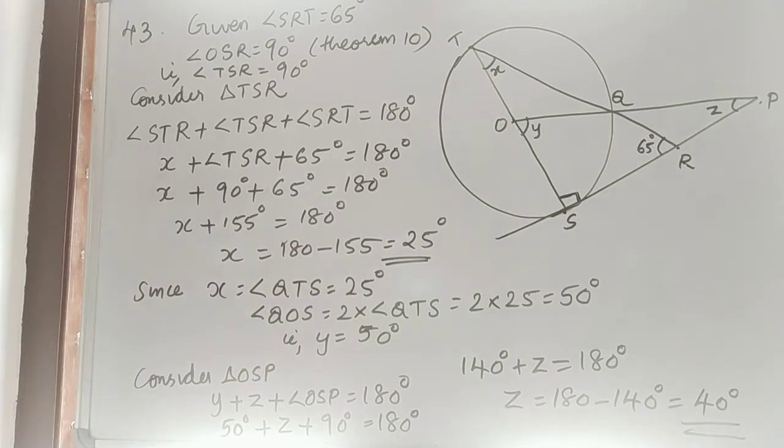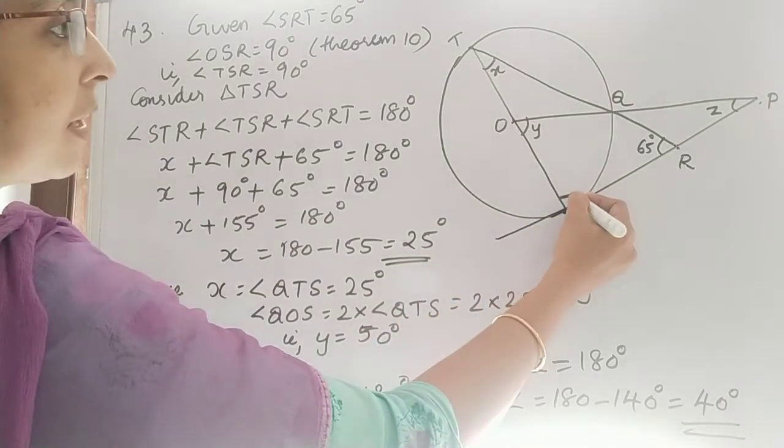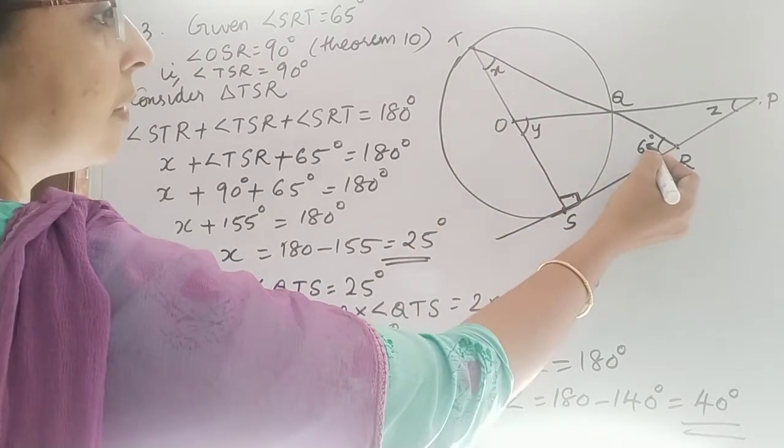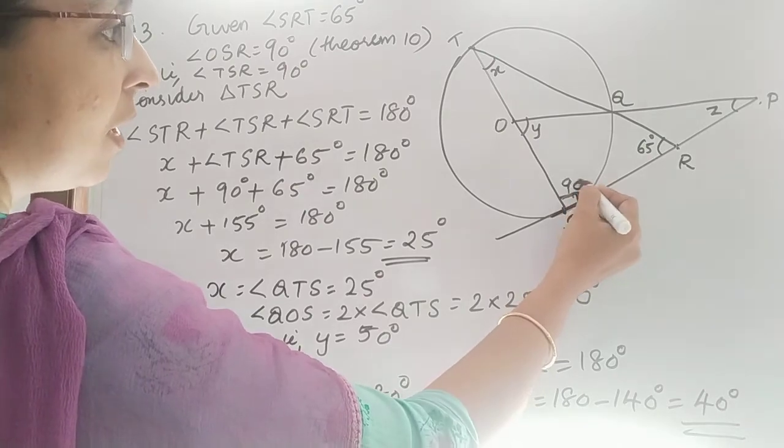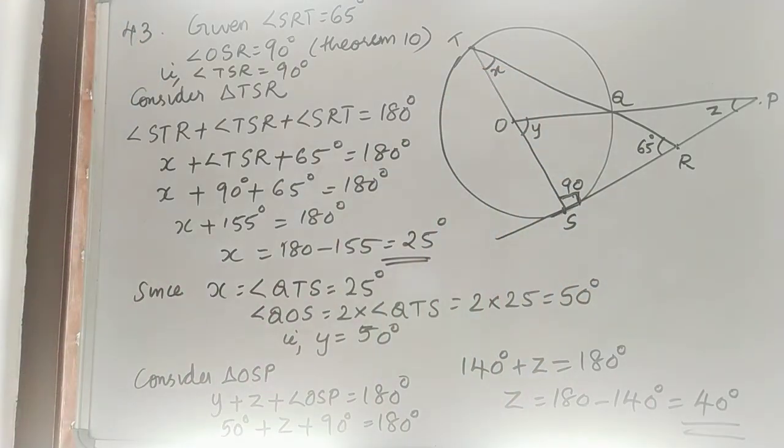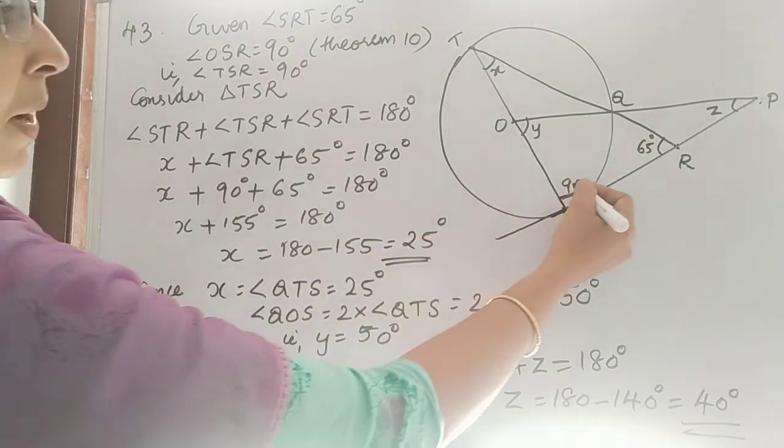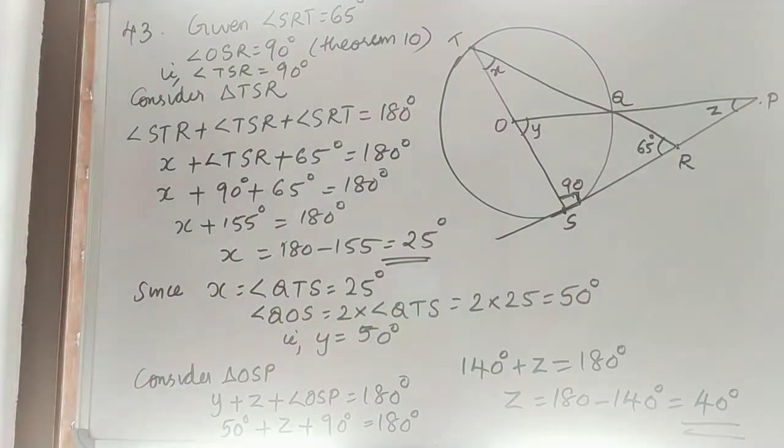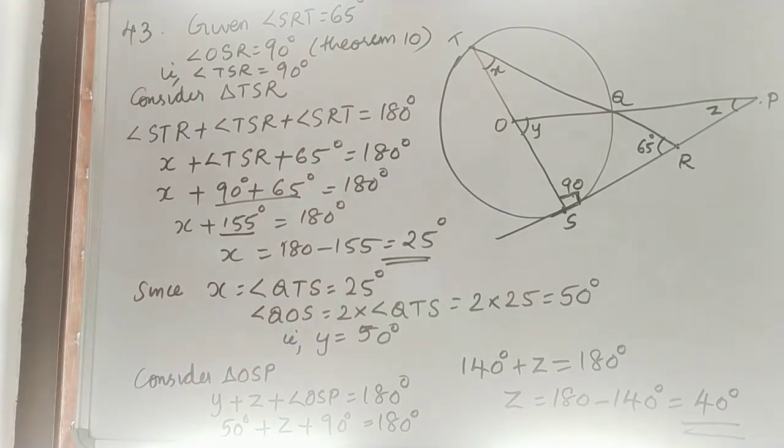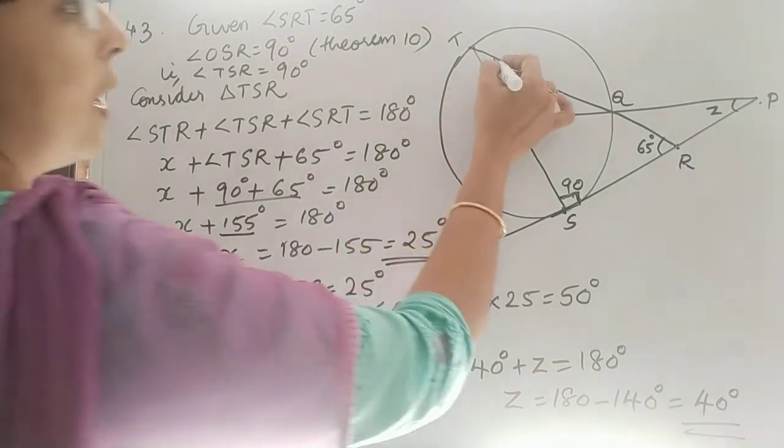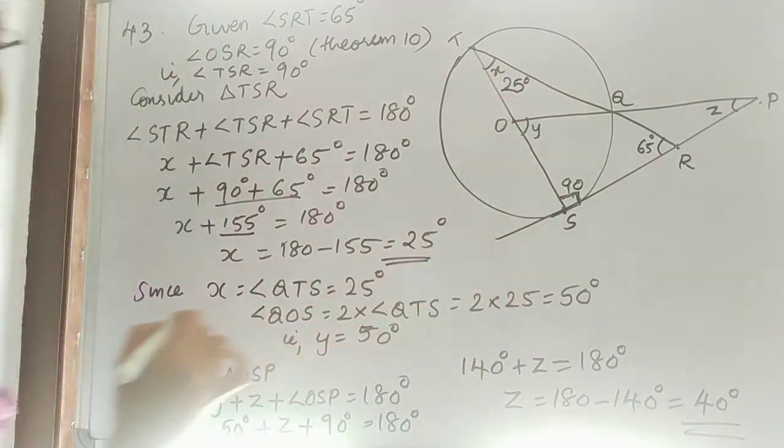So consider triangle TSR. This angle we got as 90 degrees. If you're considering TSR, this angle is 65 degrees. So what about angle T, that is X? Sum of angles of a triangle is 180 degrees. So 180 minus the sum of 90 and 65, which is 155. So 180 minus 155 is 25. So X value we got as 25 degrees.